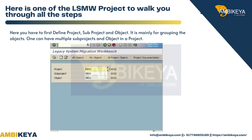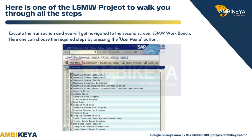Here is an LSMW project to walk you through all the steps. First, you have to define the project, sub-project, and object — mainly for grouping the objects. One can have multiple sub-projects and objects in a project. Execute the transaction and you will be navigated to the second screen, the LSMW Workbench, where you can choose the required steps by pressing the user menu button.